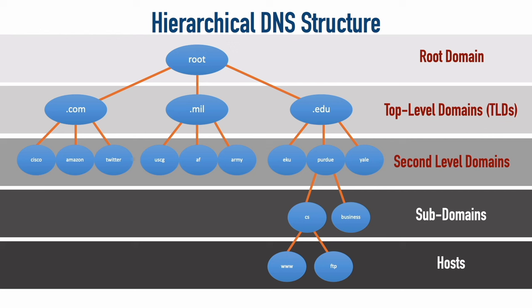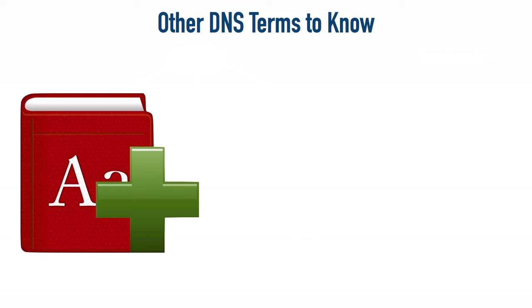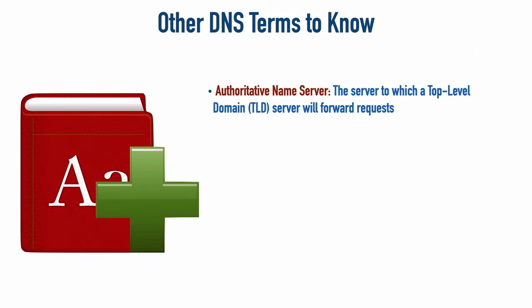Although we've already discussed several DNS terms, here are a few more important ones. First is an authoritative name server. The .com TLD points down to the primary server of a second-level domain — for example, kwtrain.com. That primary server is called the authoritative name server. It is the main server in charge of that second-level domain.